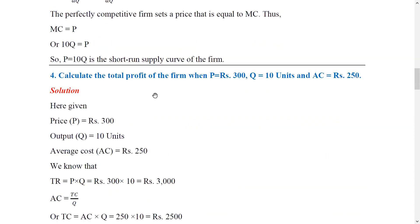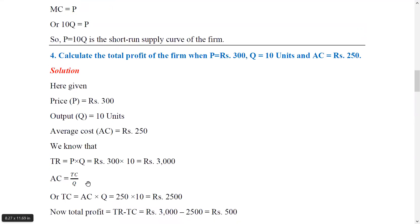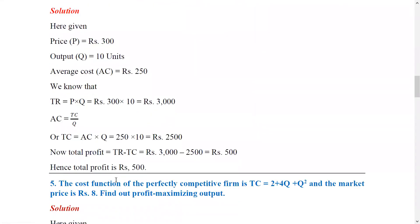Question four: calculate total profit of the firm when P = Rs. 300, Q = 10 units, and average cost AC = Rs. 250. Total profit equals total revenue minus total cost. Total revenue equals price times quantity, so TR = 300 × 10 = Rs. 3,000. Total cost equals AC times Q, so TC = 250 × 10 = Rs. 2,500. Therefore, total profit is Rs. 500.